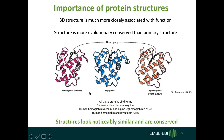You would notice that the sequence identity is very low among these proteins. Between hemoglobin and myoglobin it is close to 25%, and between hemoglobin and plant leghemoglobin it is just 15%. But look at the structure of these proteins — they are noticeably similar and are more evolutionarily conserved. Despite very low sequence similarity, they bind to the same heme molecule and retain similar structure.